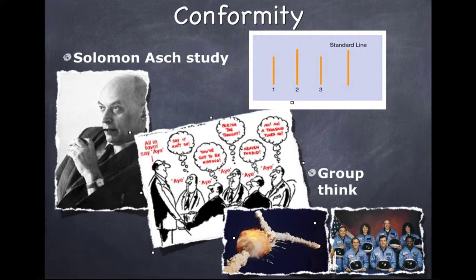One of the risks of conformity is what's called groupthink: members of a tight-knit group are more concerned with preserving group solidarity and uniformity than with objectively evaluating all alternatives in decision-making. The Challenger disaster is an example — the group was more interested in meeting the objective of launching on time than in addressing a known problem with the space shuttle. If they had dealt with that problem, the accident may not have happened.